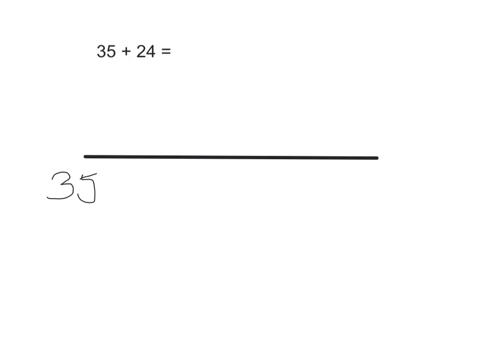Now we're going to partition the other number. We're going to look for how many tens are in the number. It says two tens, which makes 20. You could make one big jump of 20, or two jumps of 10 like this.